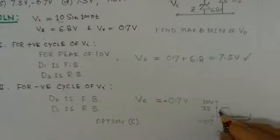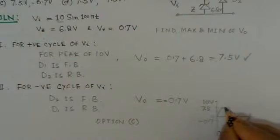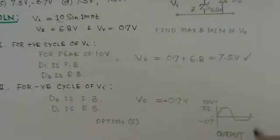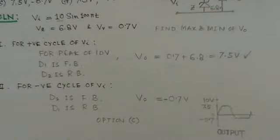So this is an asymmetrical waveform. The positive peak is cut at 7.5 volts and the negative peak has been limited to minus 0.7 volts.